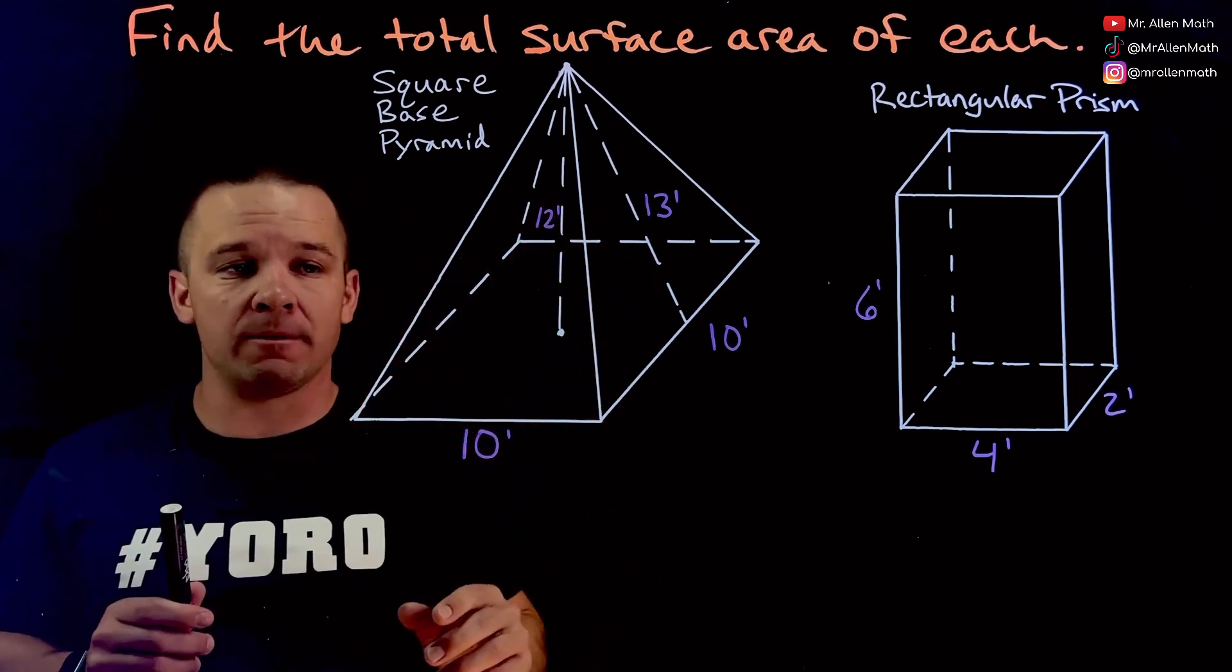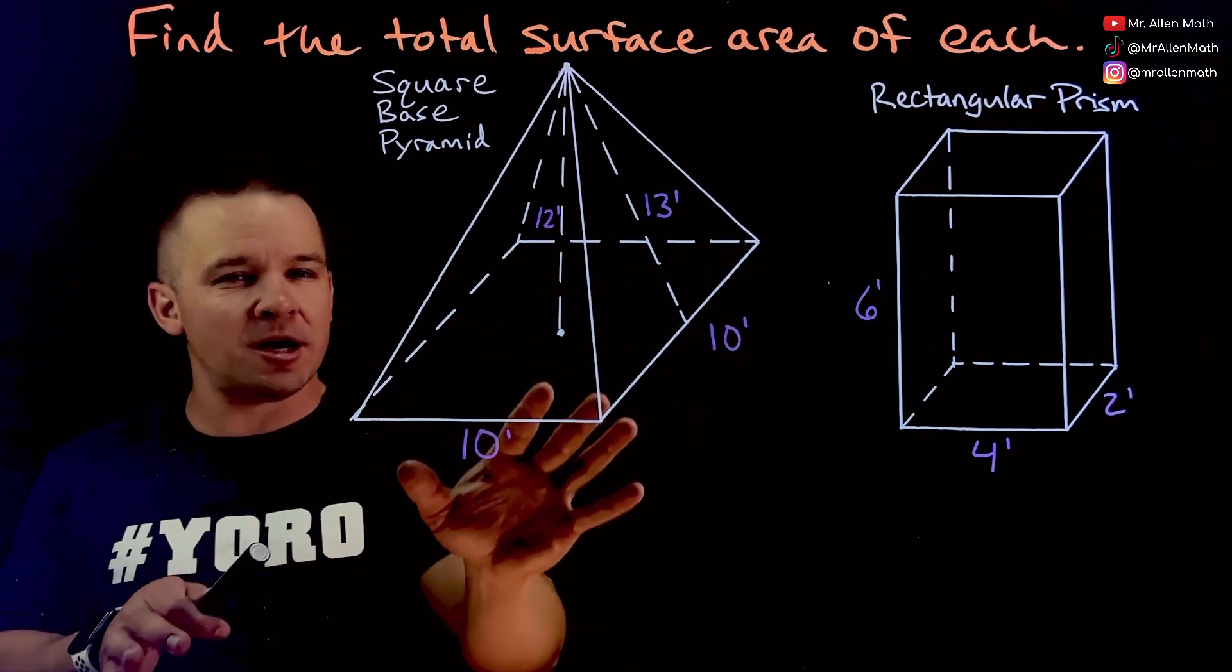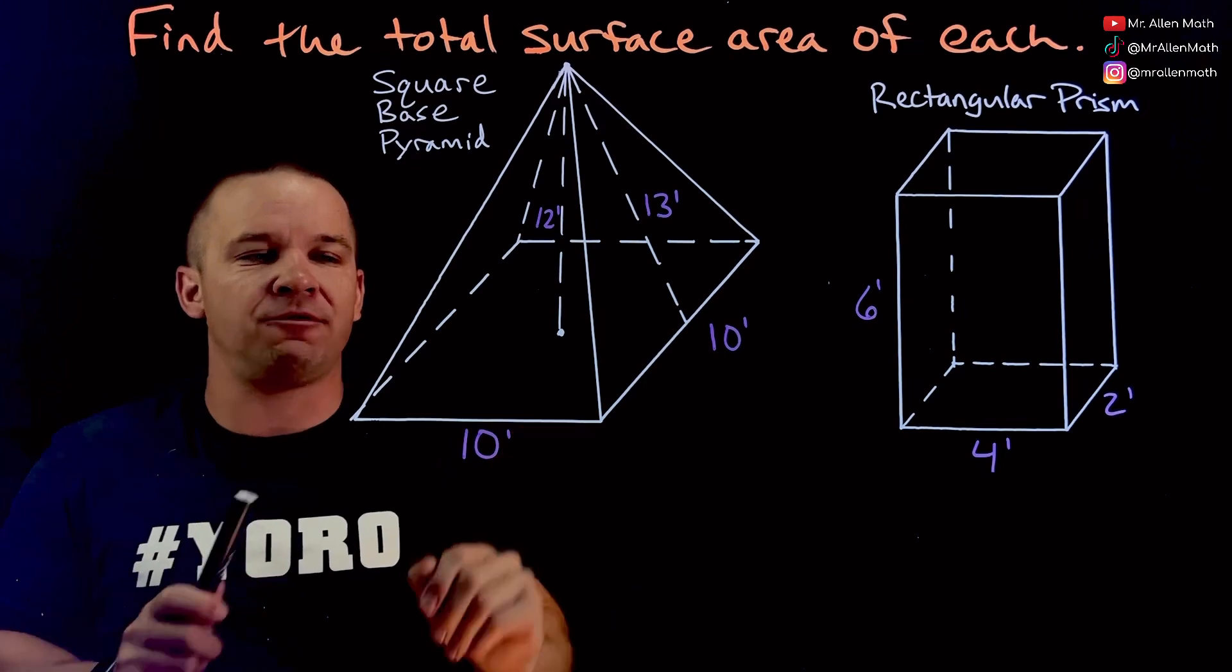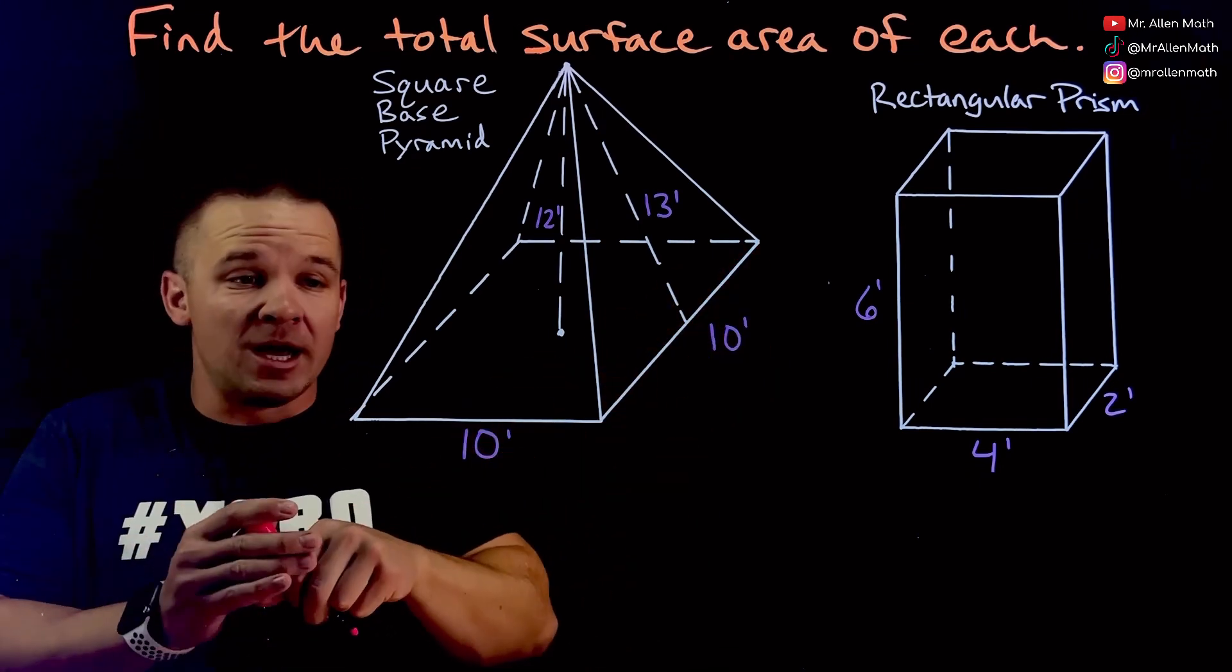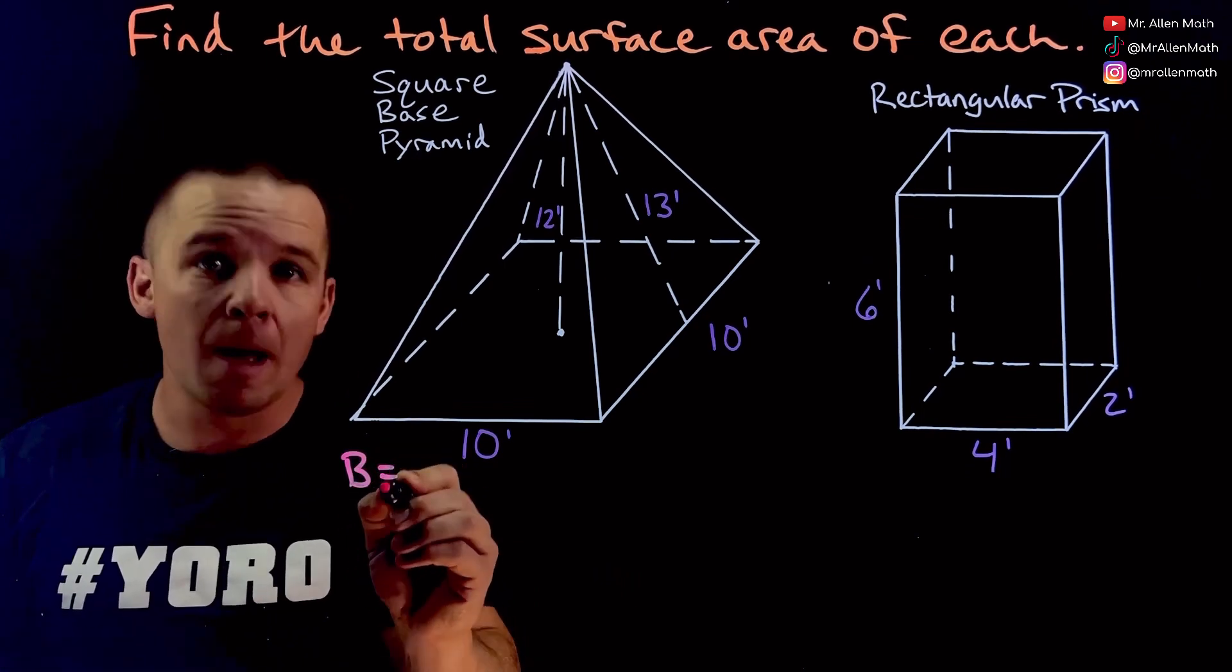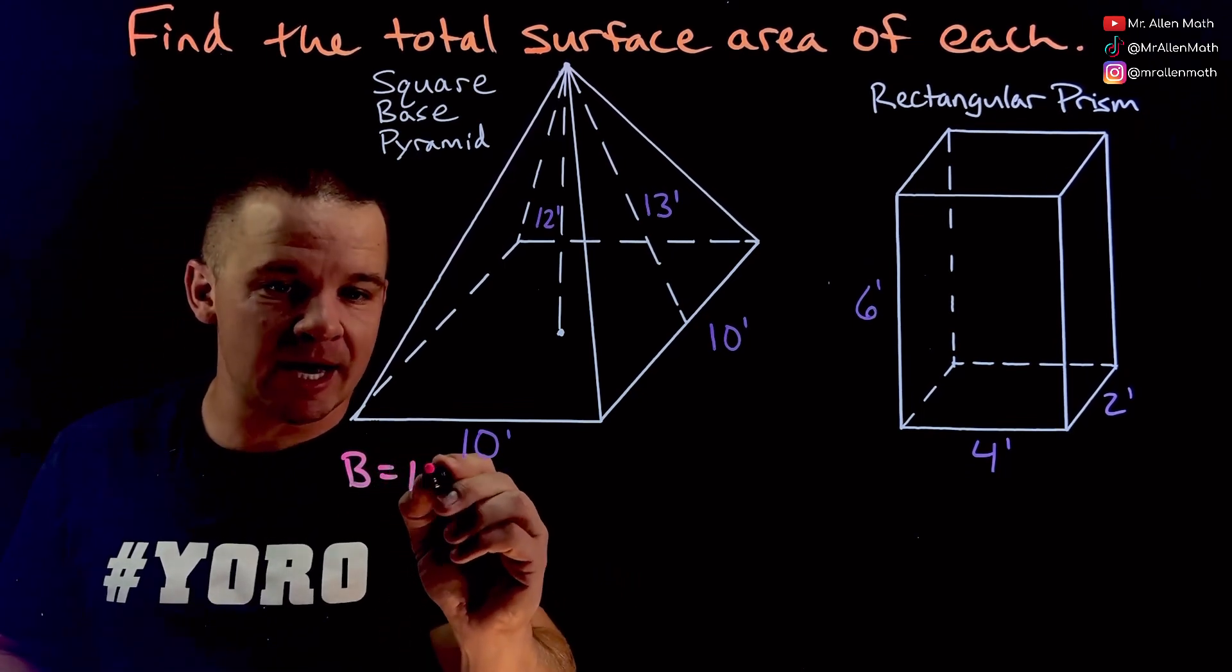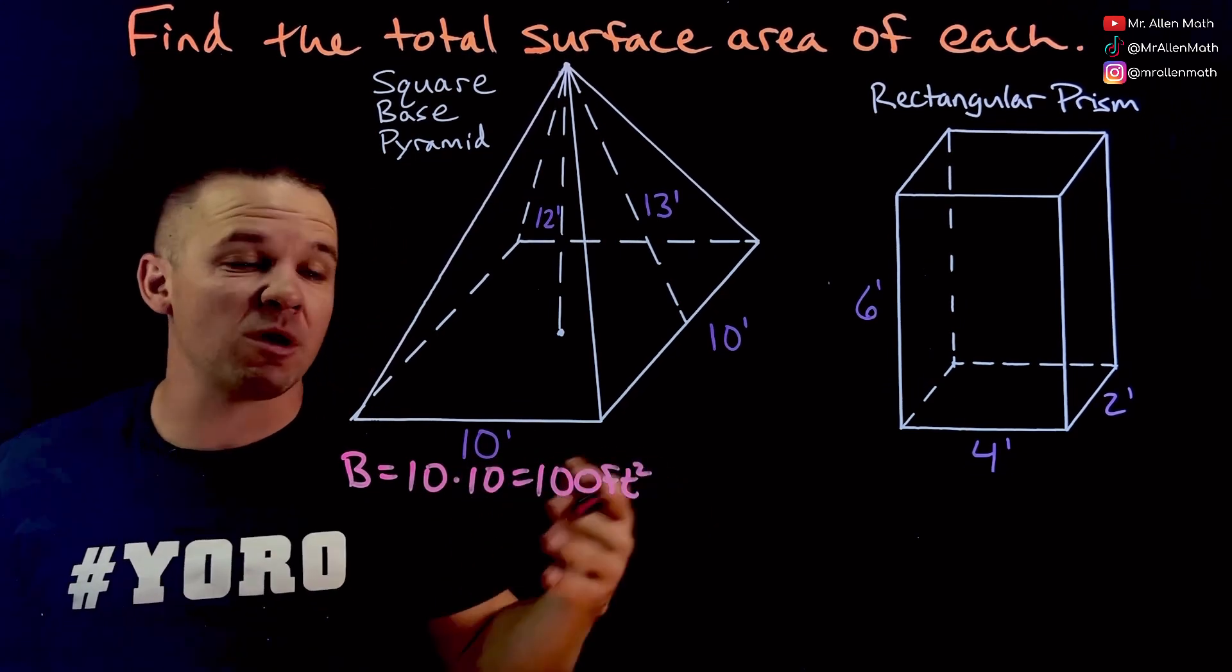All right so square base pyramid, that just means that my base is a square. It does look kind of like a rhombus here but that's for the 3D effect. It is still a square, it's a 10 by 10 square. So what I'm going to do is I'm going to find the area of my base which I'm going to notate with an uppercase B or big B, and that's going to be 10 times 10, that's 100 feet squared or 100 square feet.